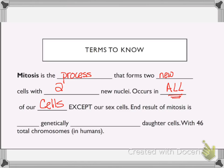A term I heard recently was calling those our body cells. So every part of our body has cells, and all of those body cells are where mitosis would occur. Another way to remember it: mitosis occurs in your toes — it makes you think that it occurs everywhere. Anyway, the end result of mitosis is two genetically identical daughter cells, meaning their genetic material is exactly alike.